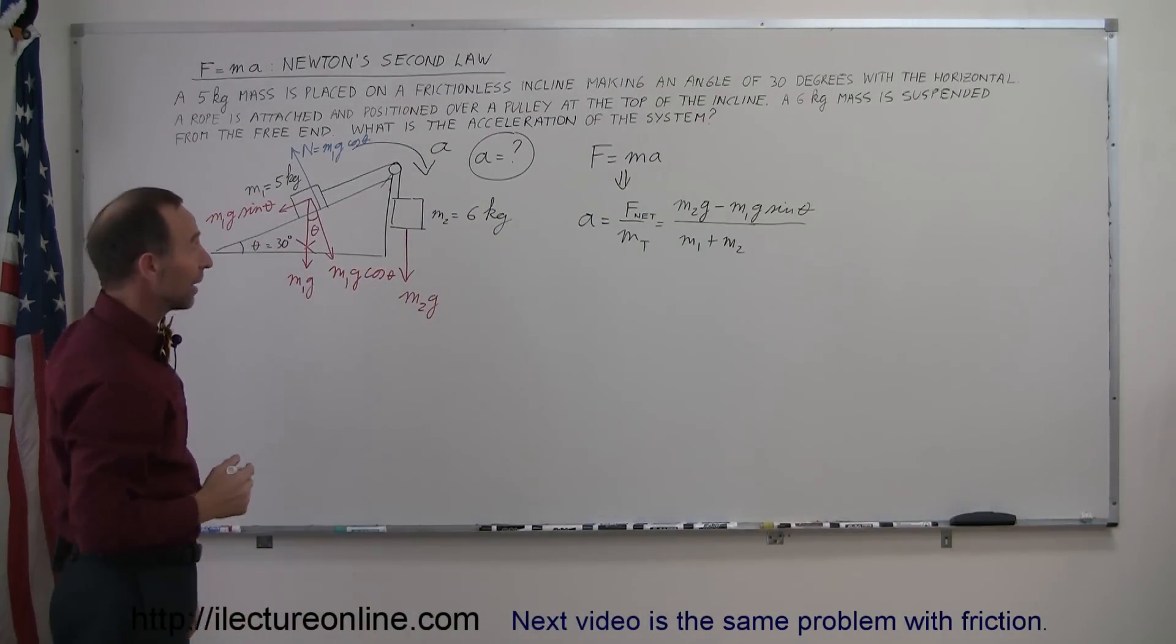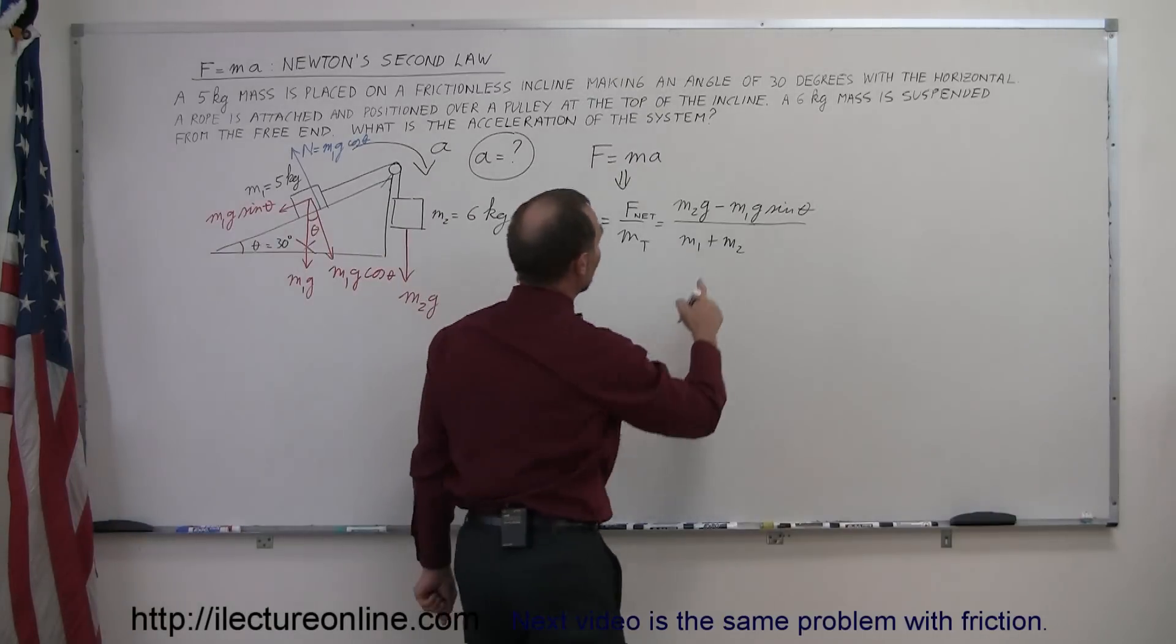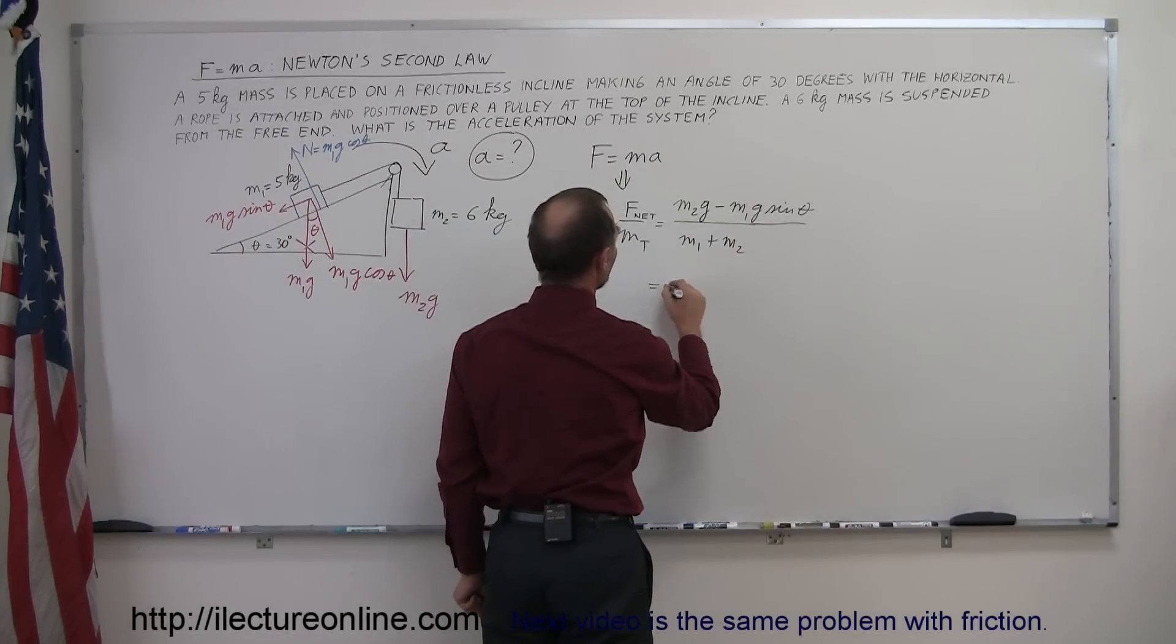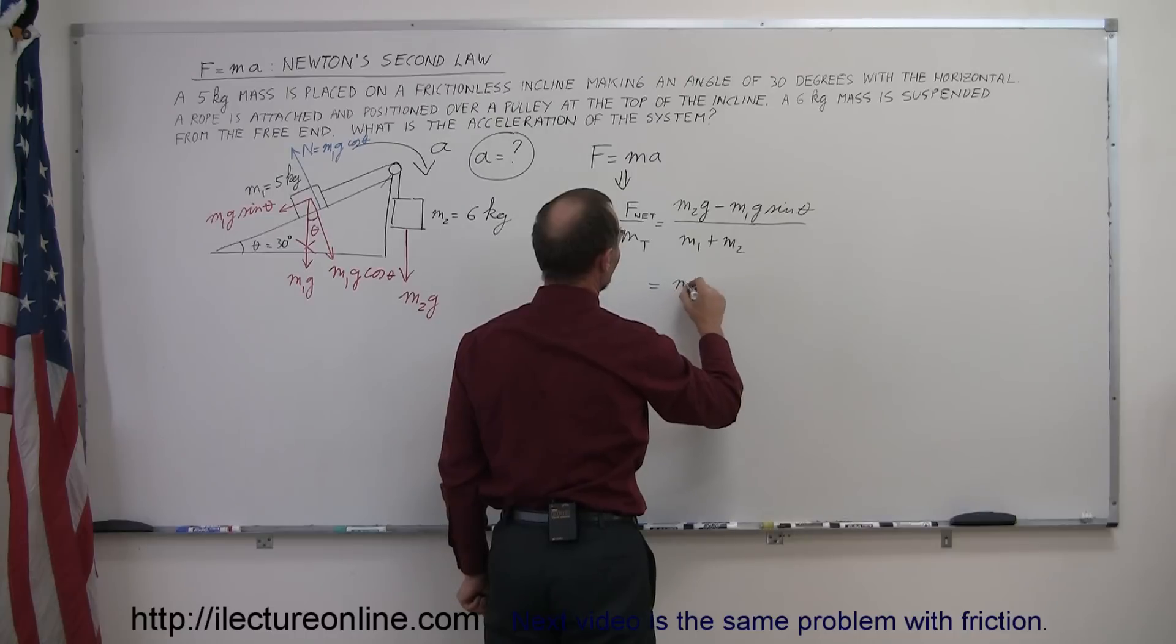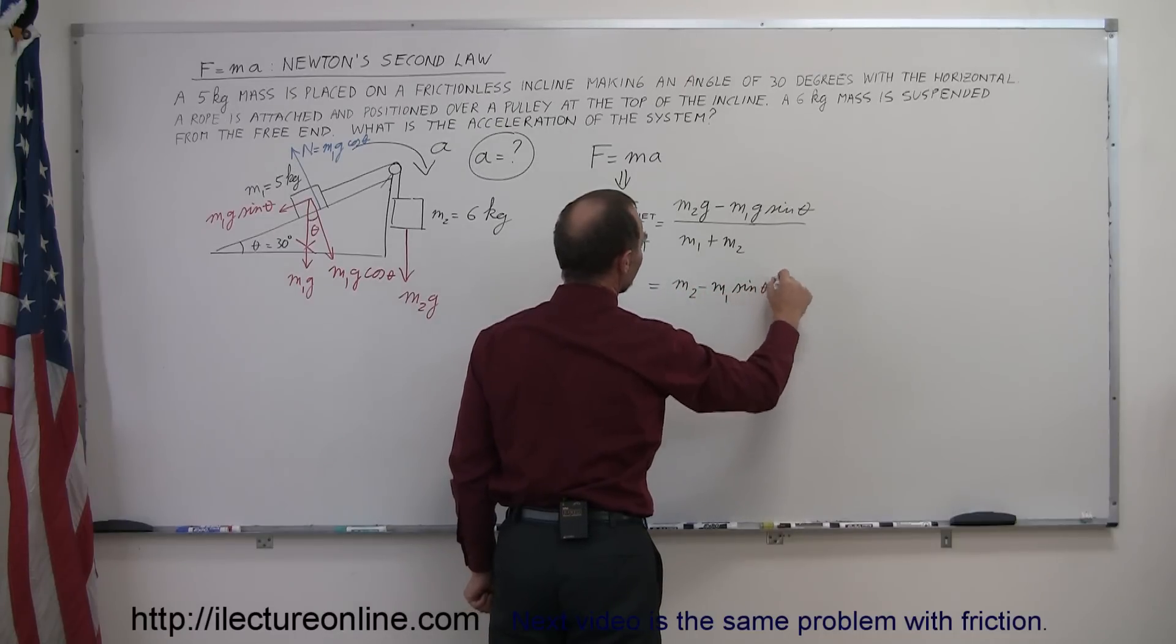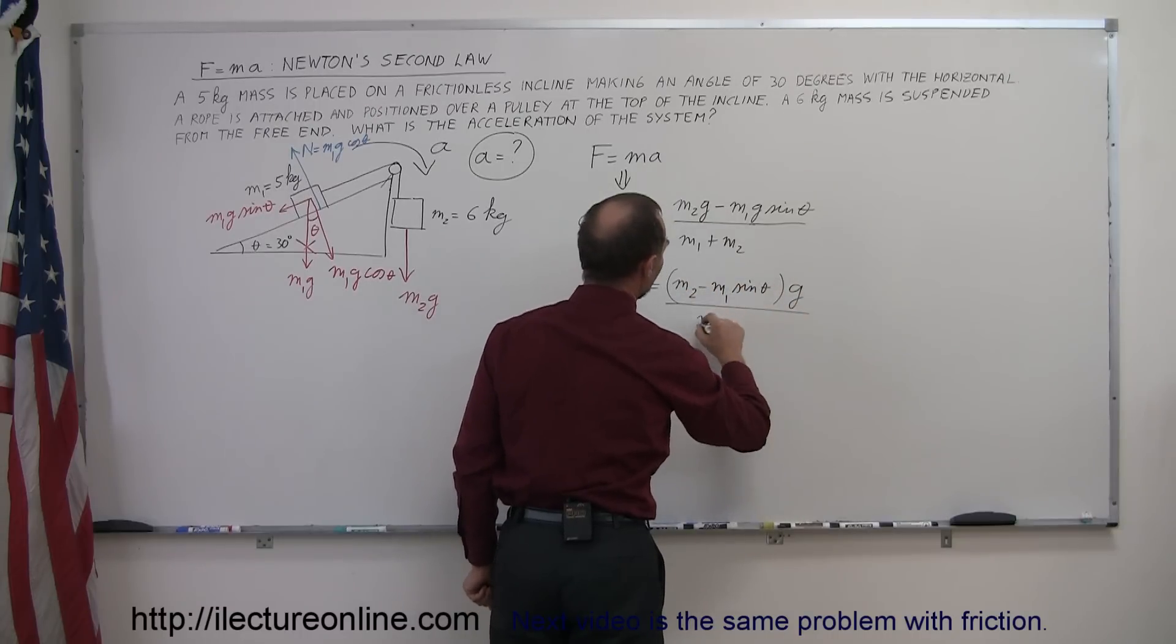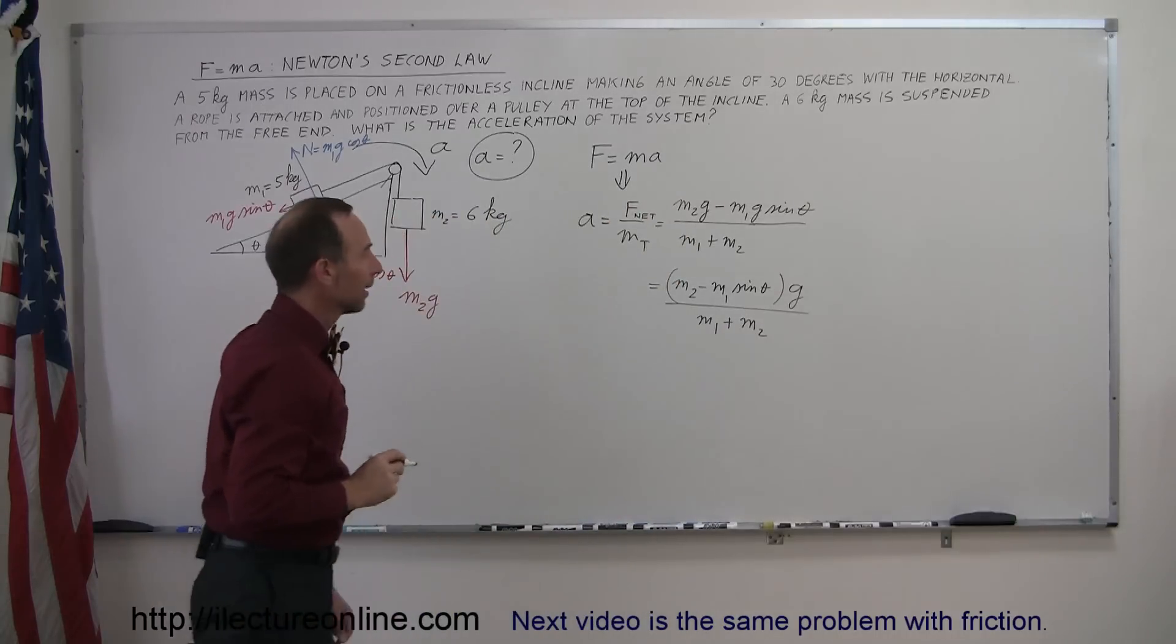Now we just have to plug in the values. We could factor out a g to make it a little bit simpler. So this is m2 minus m1 sine of theta times g, and divide the whole thing by m1 plus m2.